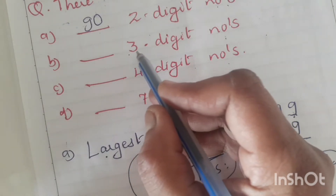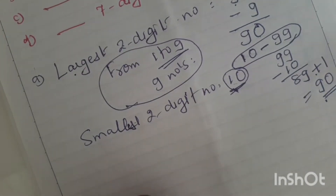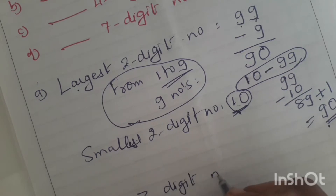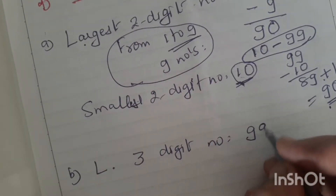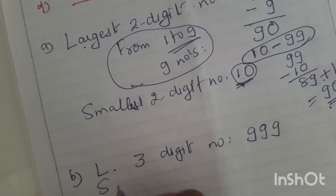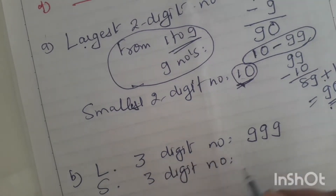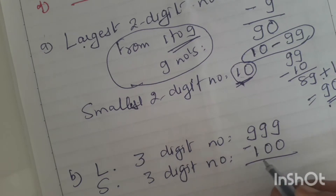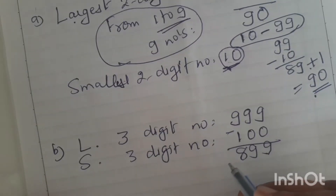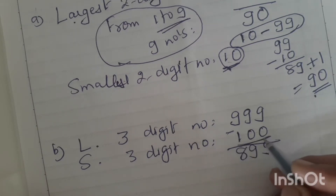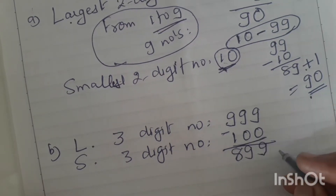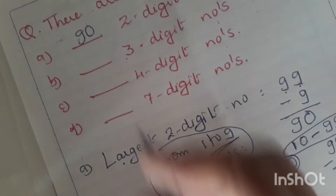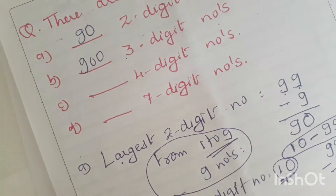Similarly, think about how many 3-digit numbers there are. The largest 3-digit number is 999 and the smallest 3-digit number is 100. Subtract: 999 minus 100 gives 899. Since 100 is a 3-digit number that was excluded, add 1: the answer is 900 numbers which are 3-digit numbers.